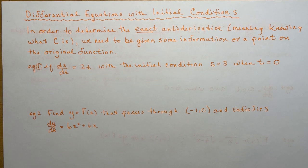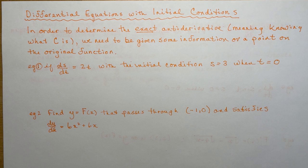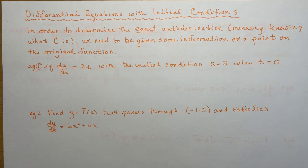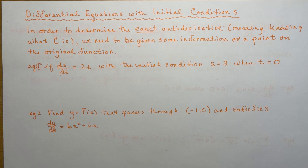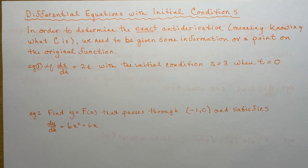Today, now that you already know how to find antiderivatives, we're going to work with differential equations that have initial conditions with them. So in order to determine the exact antiderivative — knowing what c is — we need to be given some information or a point on the original function. I'm going to do some basic examples and then a couple of business applications, because I did teach a university course for a business program, so those might be helpful to you as well.